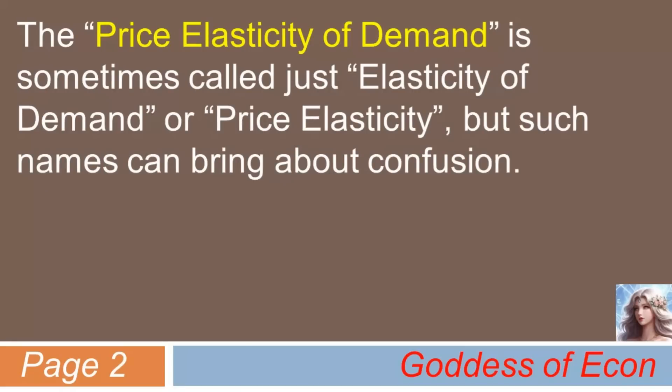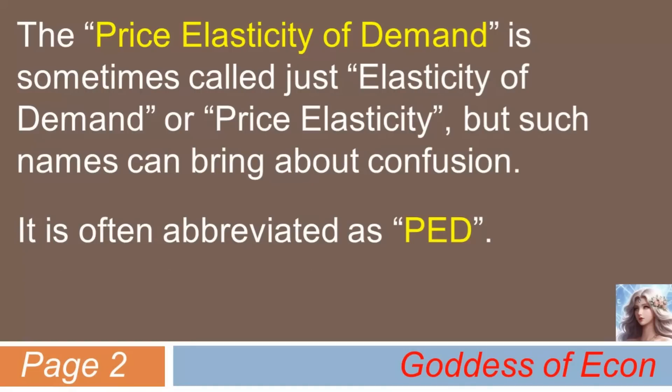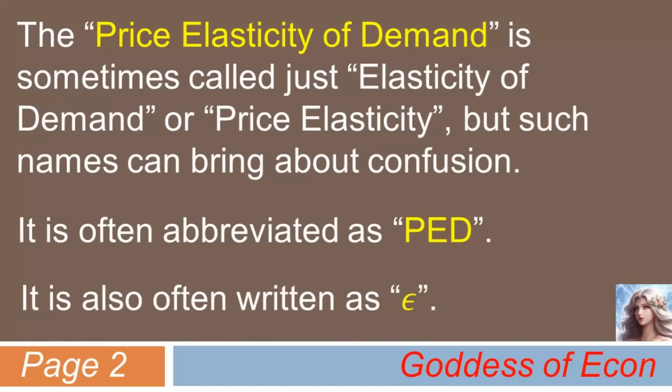The price elasticity of demand is sometimes called just elasticity of demand or just price elasticity, but such names can bring about confusion. This is because there are other elasticities such as income elasticity of demand and price elasticity of supply, and so forth. So be careful. PED is often abbreviated as PED and also written with the Greek letter epsilon. Whenever you see epsilon in economics, it very likely means some kind of elasticity, but is not always the case.